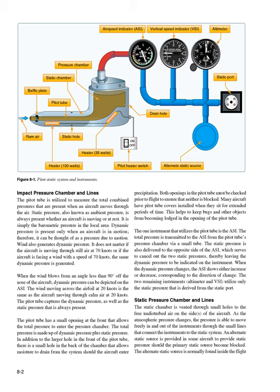The one instrument that utilizes the pitot tube is the ASI. The total pressure is transmitted to the ASI from the pitot tube's pressure chamber via a small tube. The static pressure is also delivered to the opposite side of the ASI, which serves to cancel out the two static pressures, thereby leaving the dynamic pressure to be indicated on the instrument. When the dynamic pressure changes, the ASI shows either an increase or decrease corresponding to the direction of change.